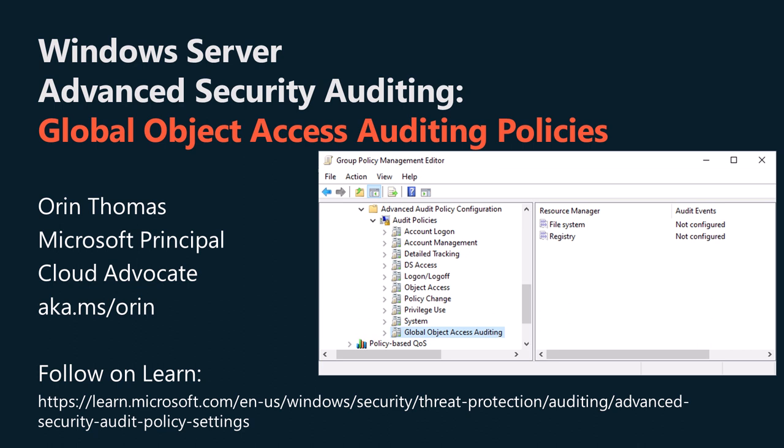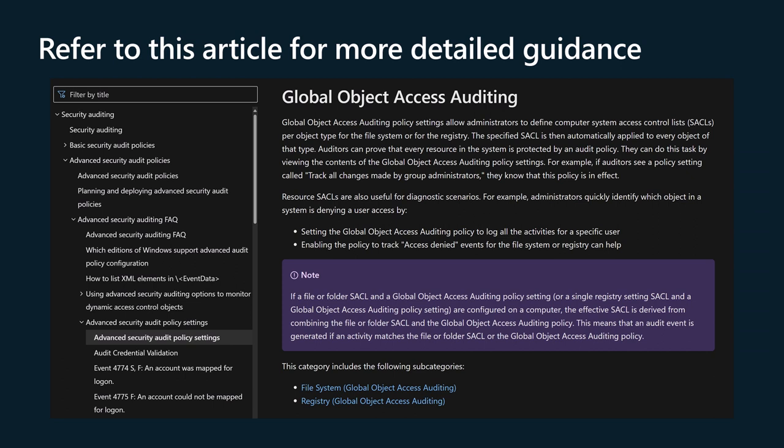G'day viewers, my name is Oren Thomas. I'm a Principal Hybrid Cloud Advocate at Microsoft. In this video, you'll learn about the Global Object Access category of Advanced Security Auditing for Windows Server. Global Object Access Auditing Policy settings allow administrators to define computer system access control lists, SACLs, for object type for the file system or for the registry. This advice is based on the documentation published on learn.microsoft.com at the link in this video's description.